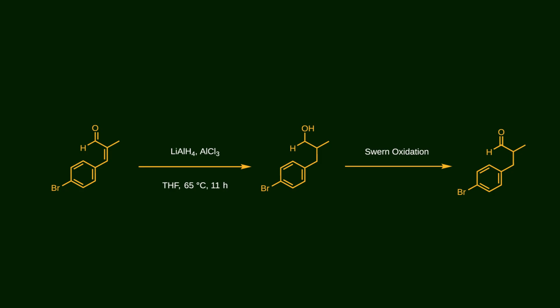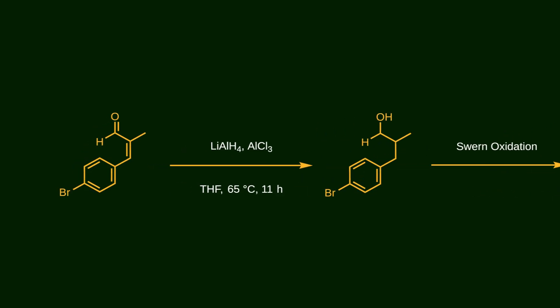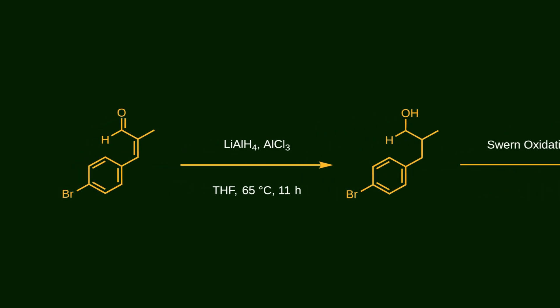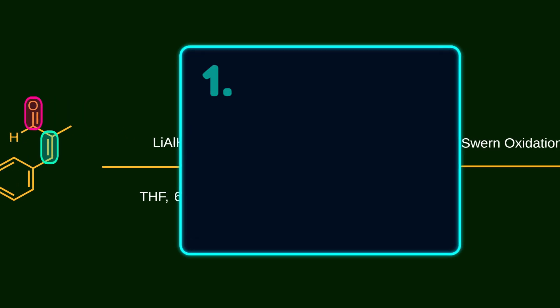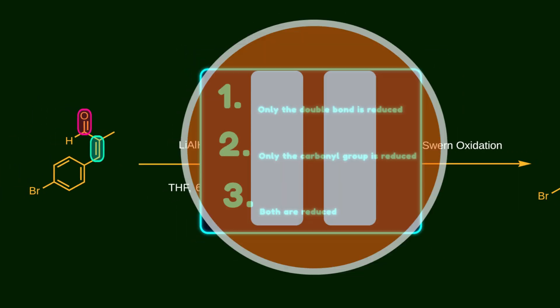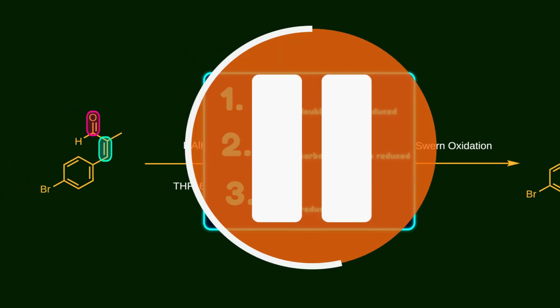In the next step, the conjugated intermediate is reduced by lithium aluminum hydride. Actually there are two active sites for reduction, the double bond and the carbonyl group. So which one gets reduced? There are three possibilities: only the double bond is reduced, only the carbonyl group is reduced, or both are reduced. Pause the video and try to figure out what happens.